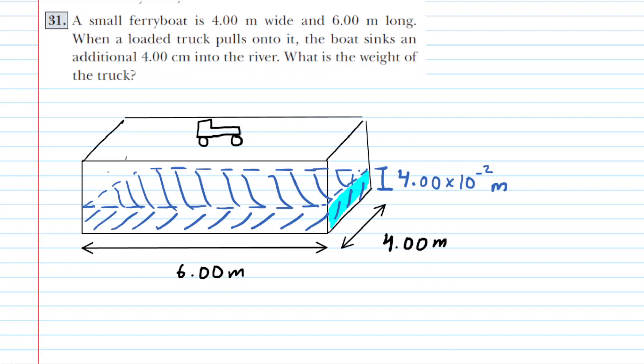We begin solving this problem with this masterful drawing. We have the length and width of the ferry boat, which we have drawn as basically a box. Got the truck resting on top of it, and then the question notes that when the truck goes onto the boat, the boat sinks 4 centimeters into the river. So we have shown a depth of water equivalent to 4 centimeters. Notice we've multiplied by 10 to the negative 2 to convert the centimeters into meters.